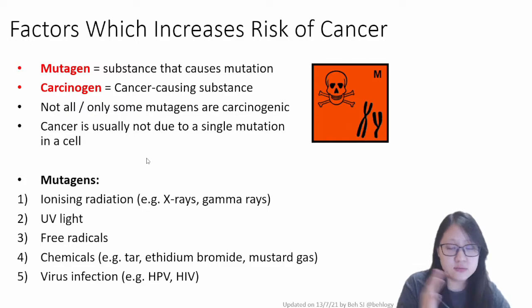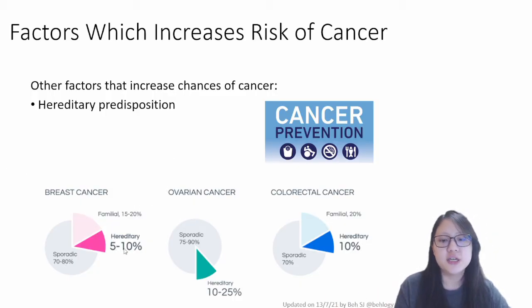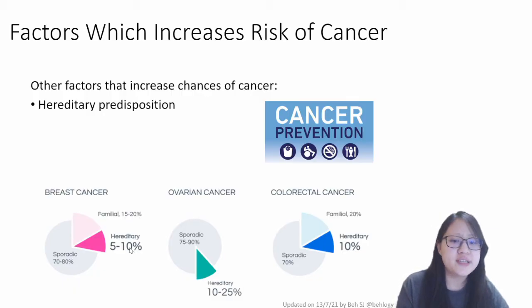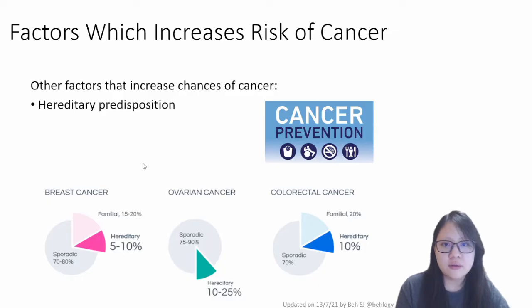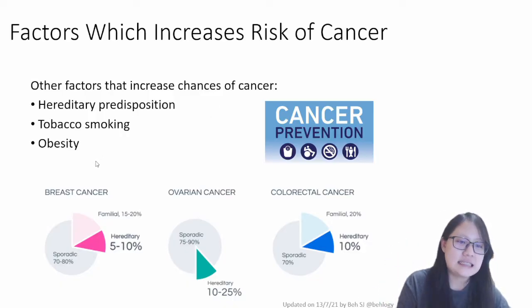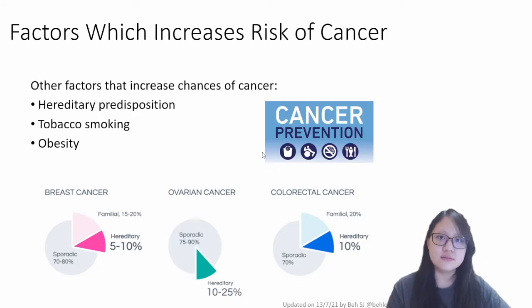What other factors increase the risk of cancer? One is hereditary predisposition — basically, if you have a family history of cancer, you are more likely to get it. In breast cancer, about 20 to 30% of cases happen in people who have family members with breast cancer as well. Tobacco smoking and obesity are also lifestyle habits that could increase cancer risk, though it's not guaranteed — it just increases the risk. To help prevent cancer, keep a healthy lifestyle, know your family history, and be aware of your risk factors.